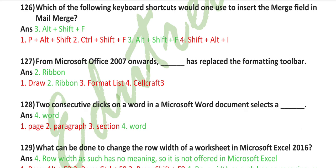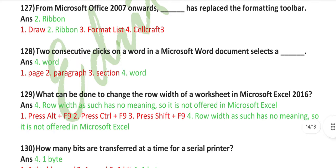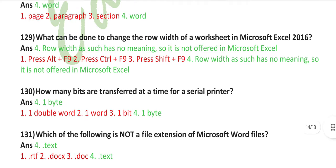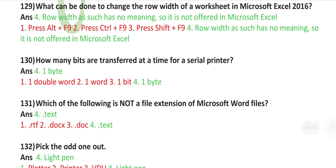From Microsoft Office 2007 onward, ribbon has replaced the formatting toolbar. Two consecutive clicks on a word in a Microsoft Word document selects the word. What can be done to change the row width of a worksheet in Microsoft Excel 2016? Row width as such has no meaning, so it is not offered in Microsoft Excel.